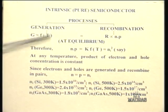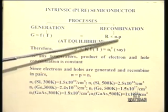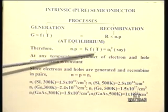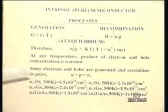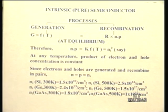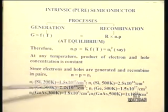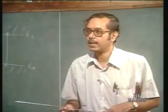Under equilibrium, generation must equal recombination to maintain a constant number of carriers. The generation rate is a function of temperature, and the recombination rate is proportional to the product of electron concentration N and hole concentration P. Equating these gives N×P = ni², where ni is a function of temperature. This means at any temperature the product of electron and hole concentrations is a constant. Since electrons and holes are generated and recombine in pairs, N equals P equals ni, the intrinsic carrier concentration.